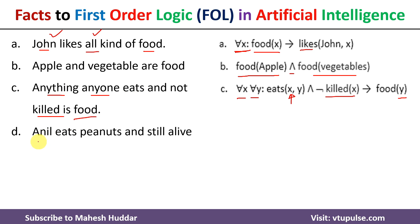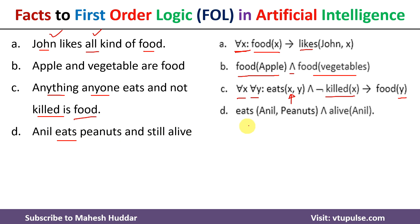The fourth fact is: Anil eats peanuts and is still alive. So we write eats(Anil, Peanuts) and alive(Anil) to represent that Anil eats peanuts and is still alive.